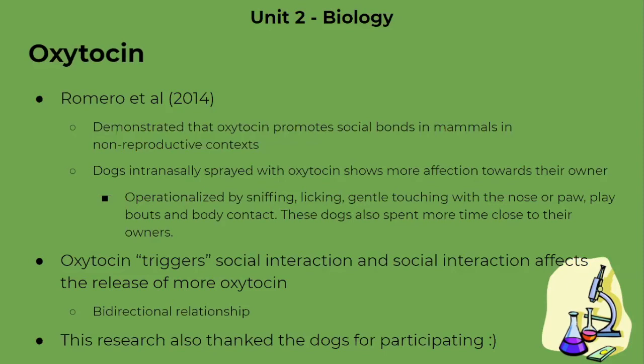We should know that there's a bi-directional relationship: oxytocin triggers social interaction, and social interaction in turn affects the release of more oxytocin. So if you were administered with some oxytocin, that would trigger more social interaction, and that social interaction would in turn increase the oxytocin in your bloodstream — related in a bi-directional way.